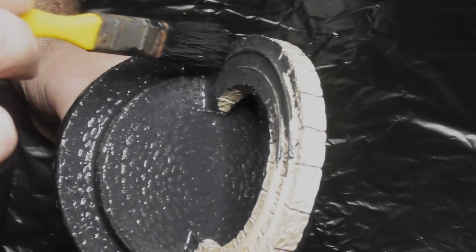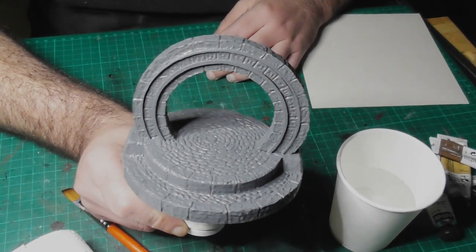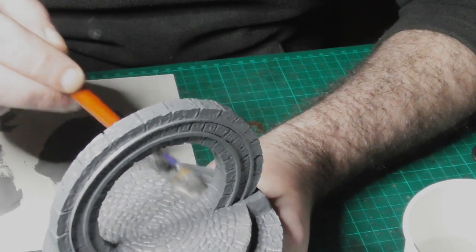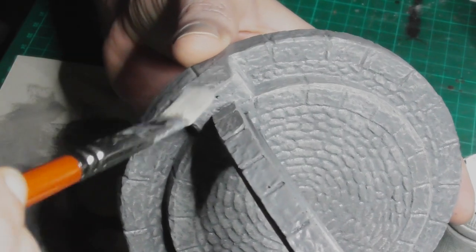As usual I primed everything with PVA and black paint, then I undercoated the portal with a light grey. I did the stone first because I was planning to use a lot of washes and heavy dry brushing on this. If I had done the inner ring first I would almost certainly have splashed it.